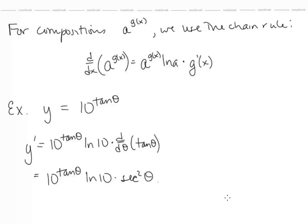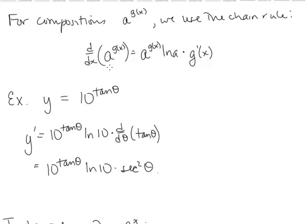For compositions, a to the g of x, we need to use the chain rule. The derivative of a to the g of x is a to the g of x times ln a, multiplied by g prime of x. For example, with y equals 10 to the tan theta, a is 10 and instead of x we have theta. Our derivative is 10 to the tan theta, multiplied by ln 10, multiplied by the derivative of tan theta, which is secant squared theta.